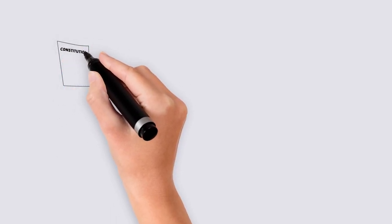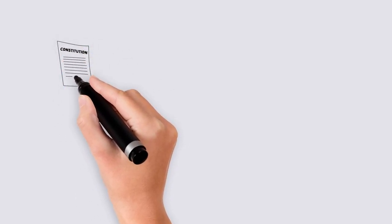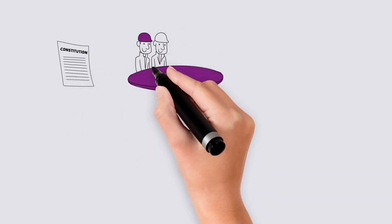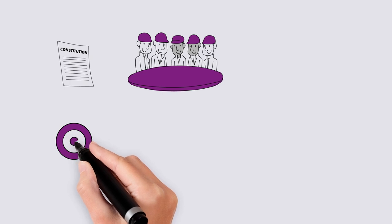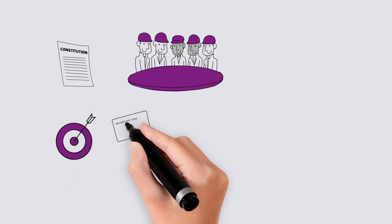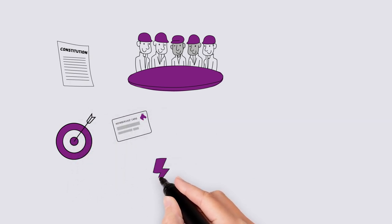Your Constitution is the guide on how to run the association. It sets out the role of your committee, your purpose for being incorporated, how to become a member, and how to deal with conflict.